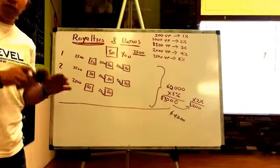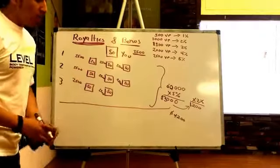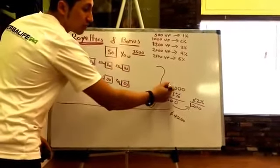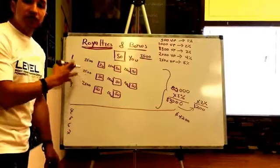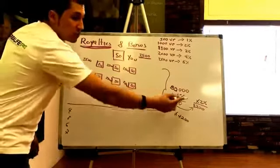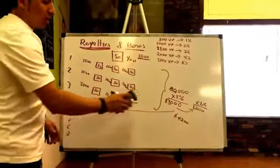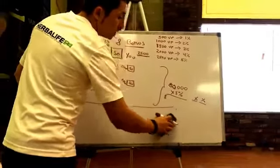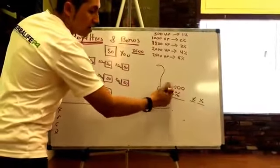Keep in mind this is an average — the exact amount depends on your group's activity and whether you have other GET Team members in your downline. Now let's say you keep growing and your group reaches 80,000 volume points. I'm still only talking about the first three lines here. Five percent of 80,000 is $4,000 in royalties. And instead of the 2% bonus, you now grow to a 4% bonus.